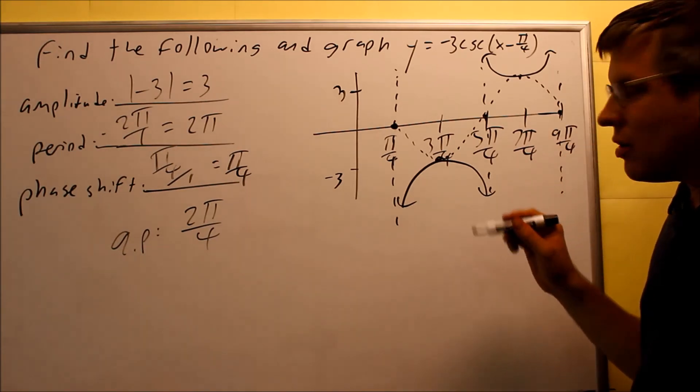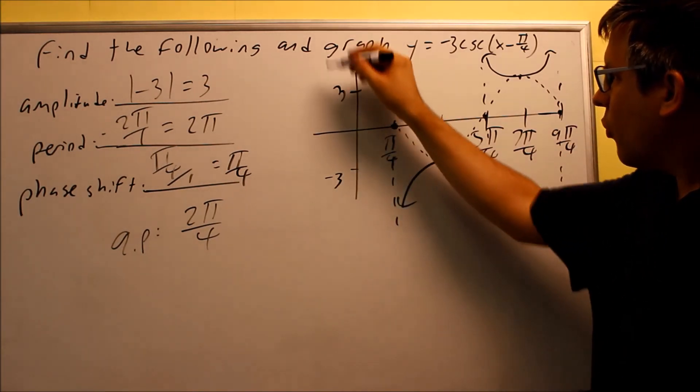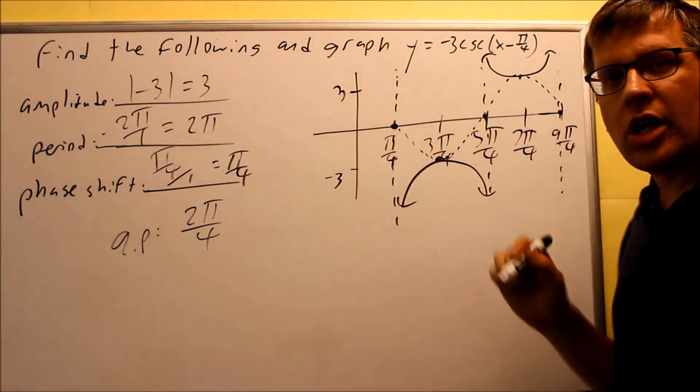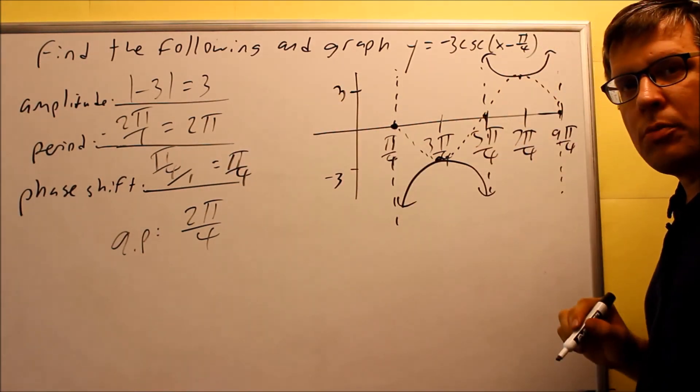And of course, remember, it continues forever because this pattern keeps on going. So you have one up, one down, one up, one down. It keeps doing that all the way across. But this would be considered one period.